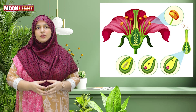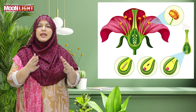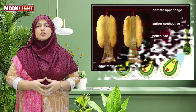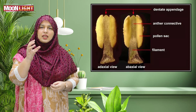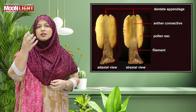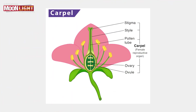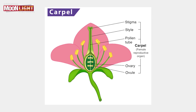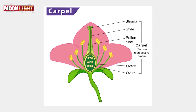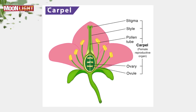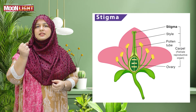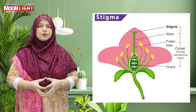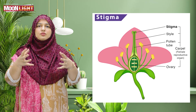The stamen is the male reproductive part of the flower. It consists of the anther, which produces pollen, and the filament, which supports the anther. The carpel is the female reproductive part, which includes the stigma, style, and ovary. The ovary contains the ovule.